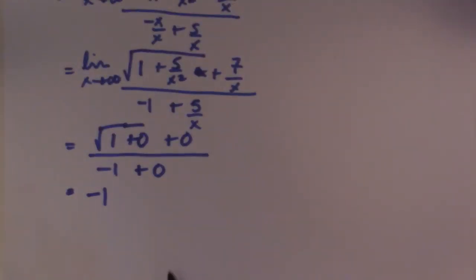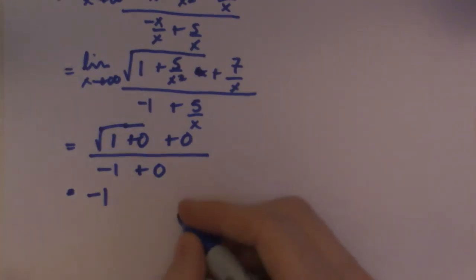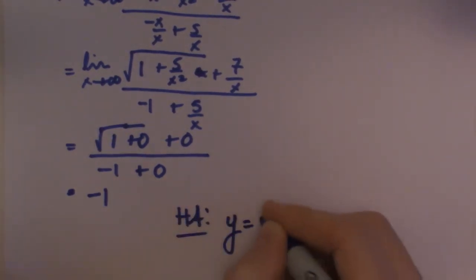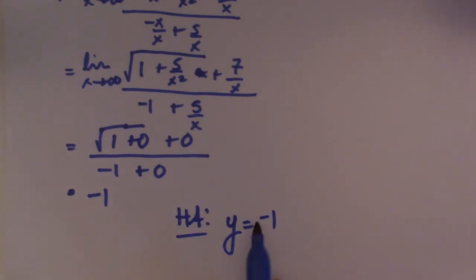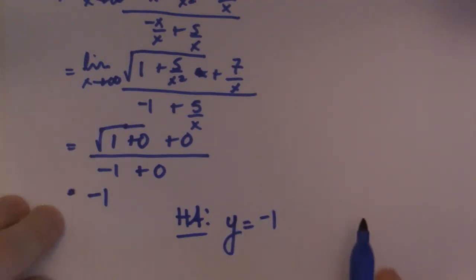Alright, so there it is. So the horizontal asymptote of this guy, the HA, is y is equal to negative 1. So if we actually looked at this graph, that's what we'd see. Alright, so let's go ahead now and try the other limit, just see how it differs.